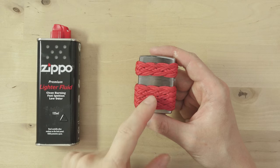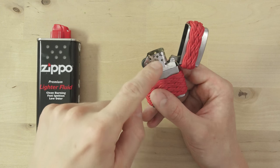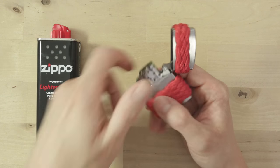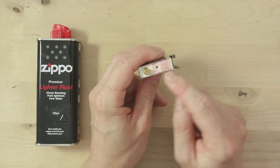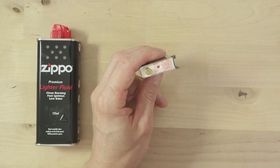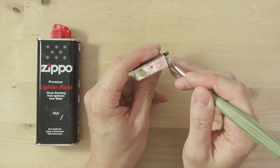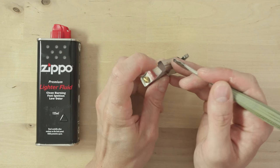Now, to actually fill your lighter, open it up and remove the insert. Here at the bottom, you have this felt barrier, which you're going to lift up a little bit.